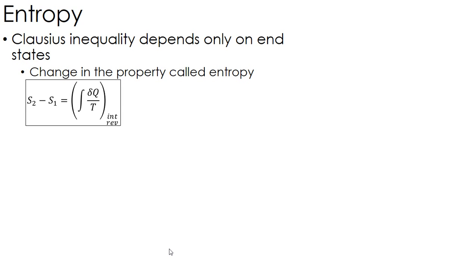So that change in entropy is nothing more than Q over T. And again, this only depends on those end states, so therefore it is a property.